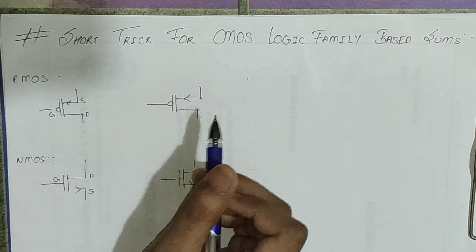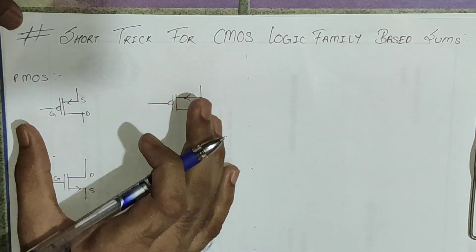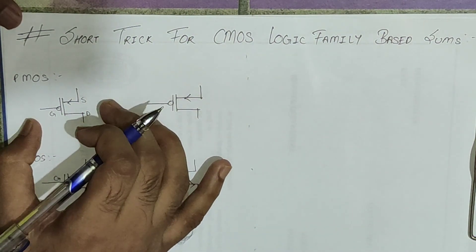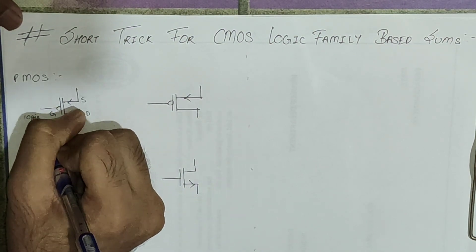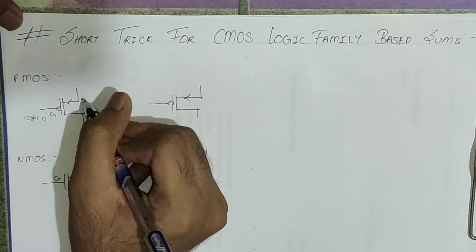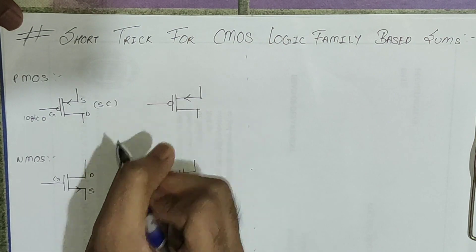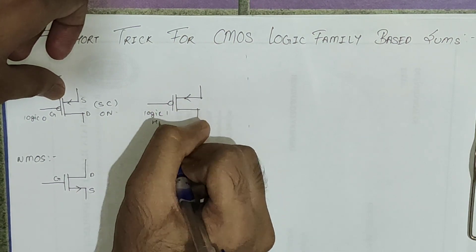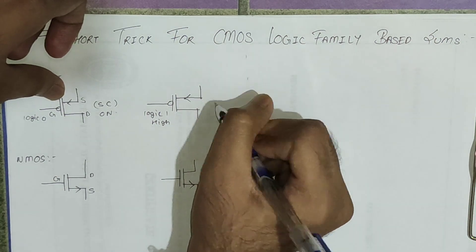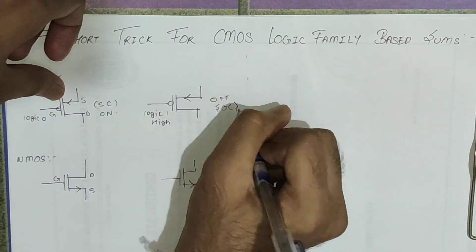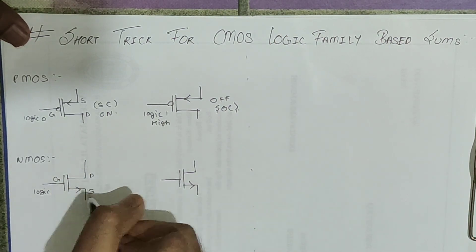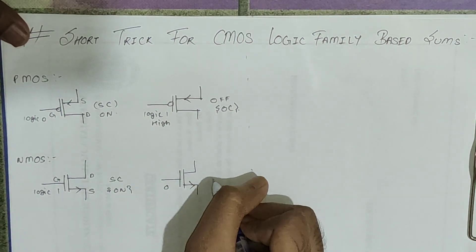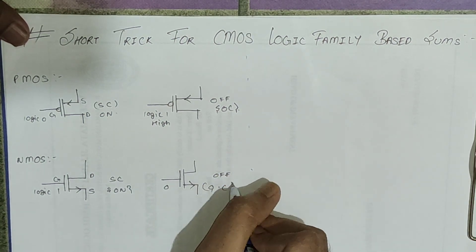Now we will see for what logic PMOS will be short circuit and for what logic NMOS will be short circuit. If we give logic 0 at input for PMOS, it will be short circuit — the PMOS gate will be ON. If we give logic 1, PMOS will be OFF, basically open circuit. For NMOS, if you give logic 1 it will be short circuit (ON), and if you give logic 0 it will be off (open circuit).